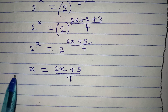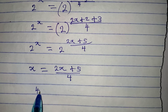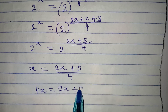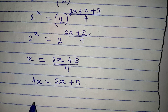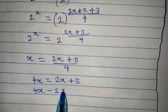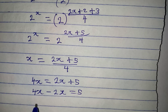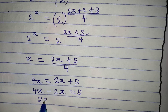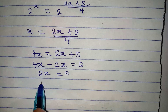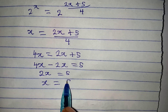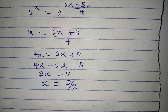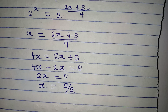We cross-multiply so that 4x equals 2x plus 5. Then 4x minus 2x equals 5, giving us 2x equals 5, so x equals 5/2. Now let's go back to the original equation and check.